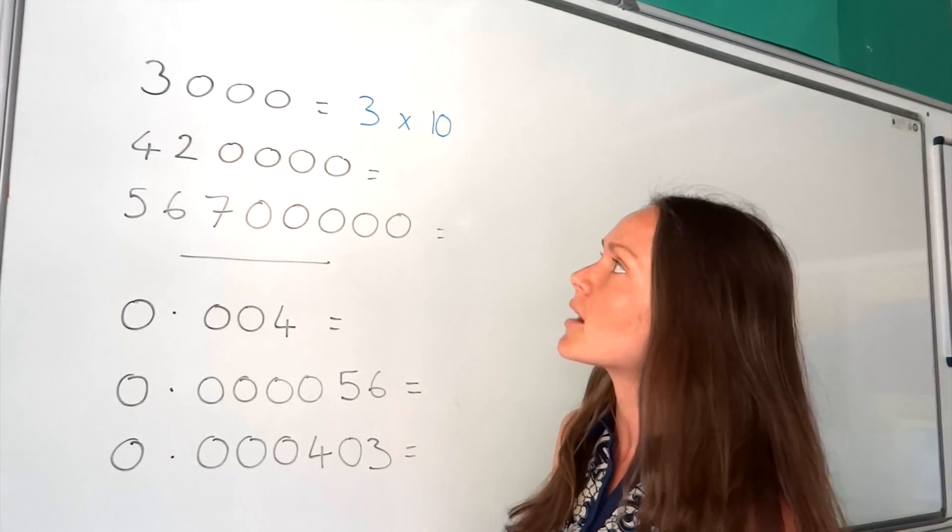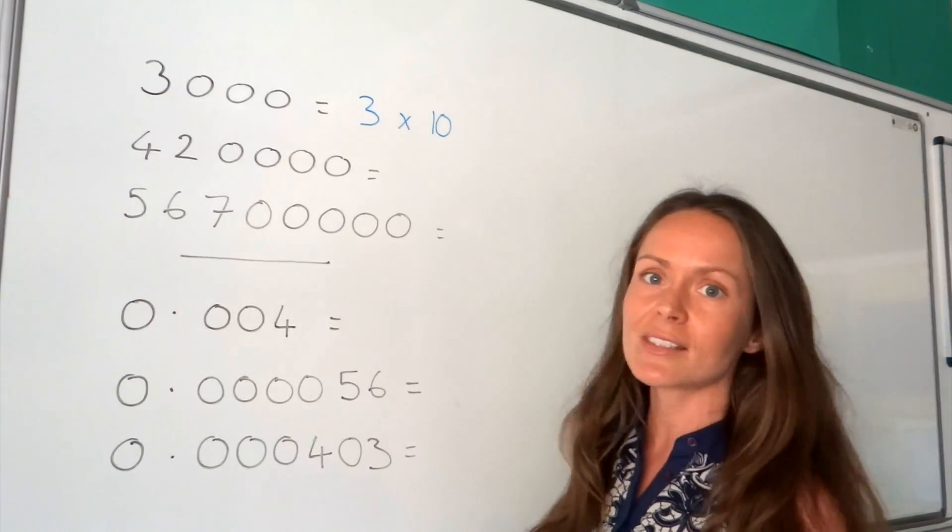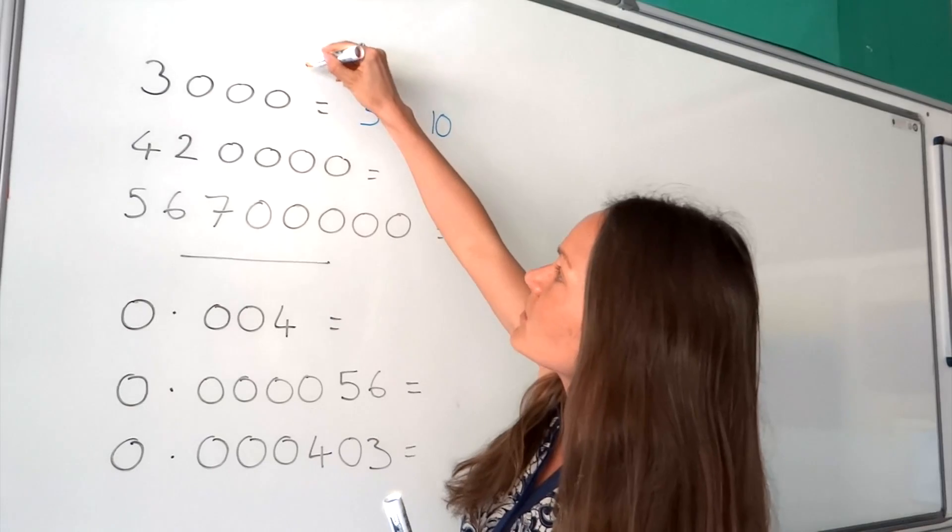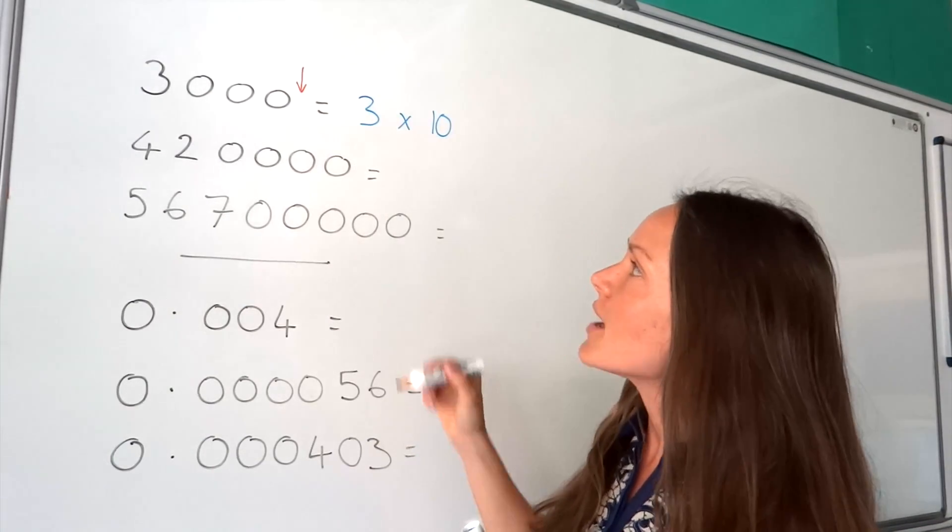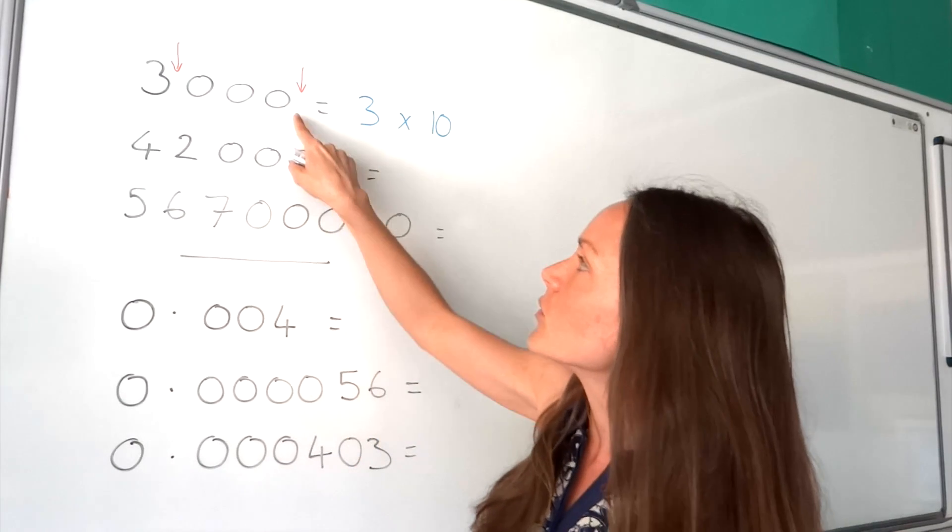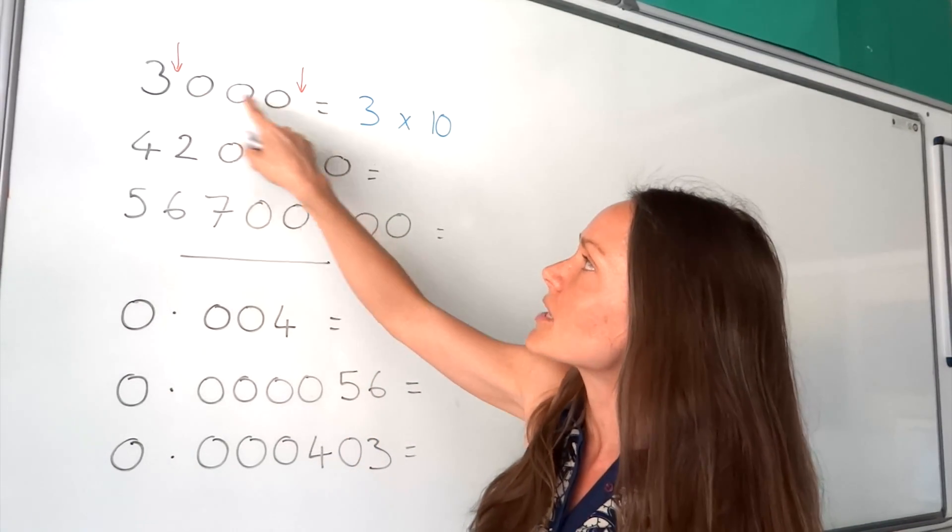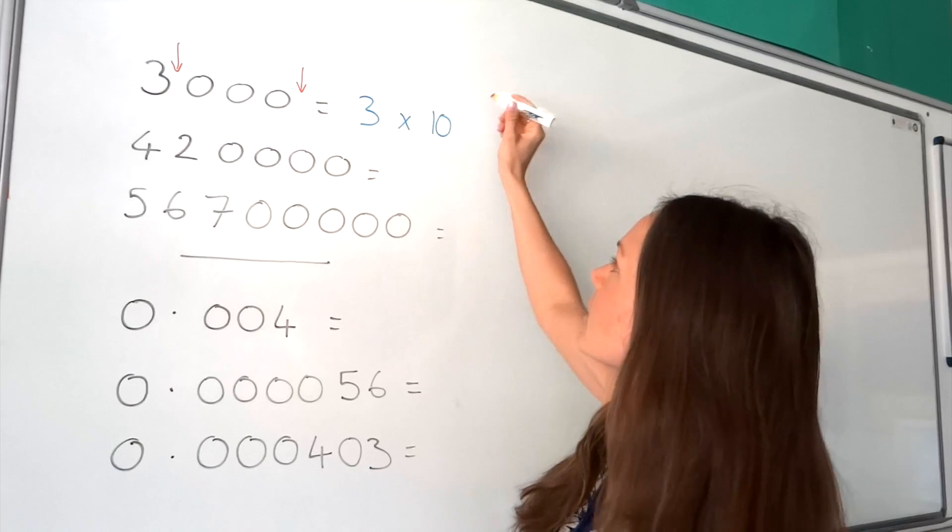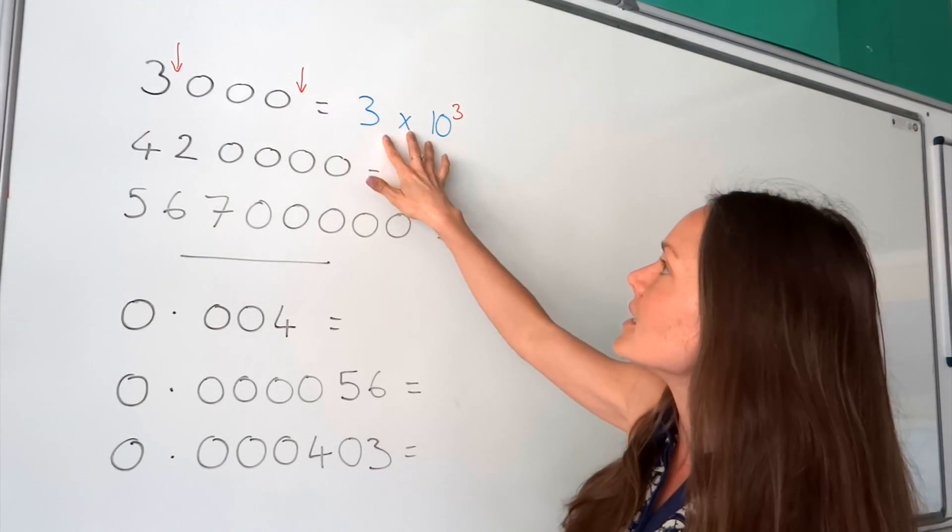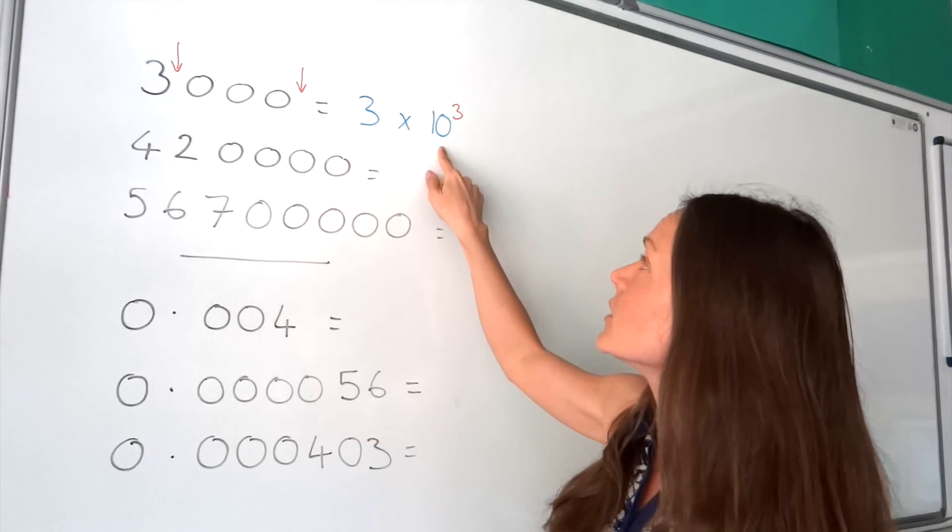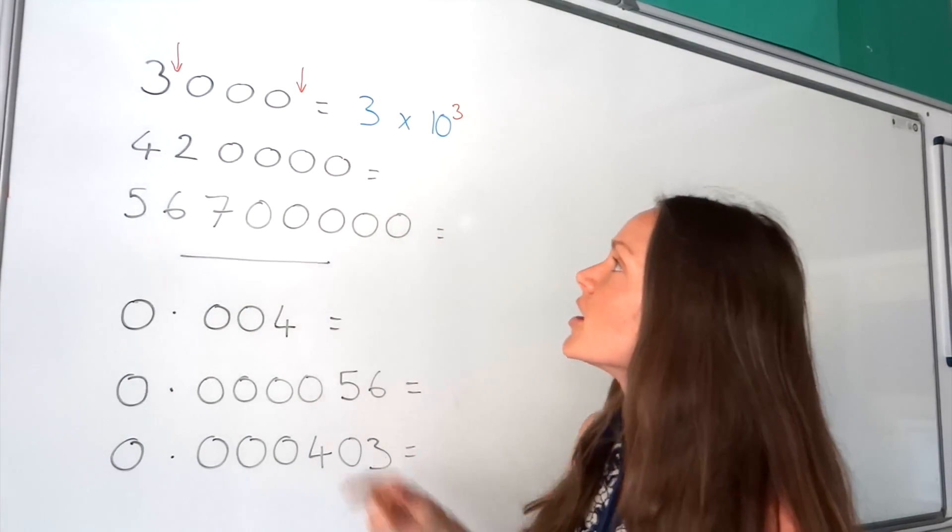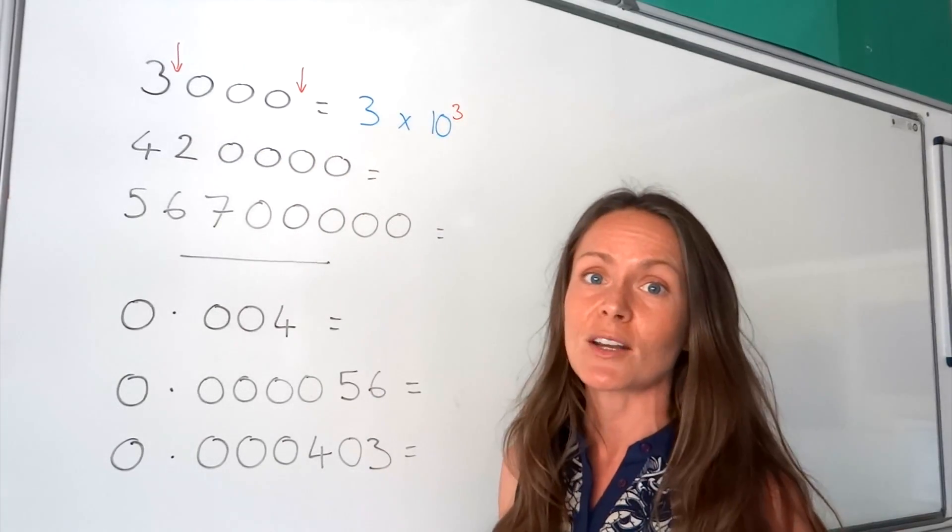Now we need to write a power here because we can't just leave it like this because 3 times 10 is 30 and the number here is 3000. So we need to look to see how many places we've moved the decimal. The decimal used to be here and now if I'm making this number 3, it's moved to there. So you can see the decimal, it looks like it's jumped three places here. So the power we put on the 10 is 3. So this is equal to the number 3,000 because 10 cubed is 1000 and 3 times 1000 is 3000. So here we go, we've done the first one, that's now in standard form.